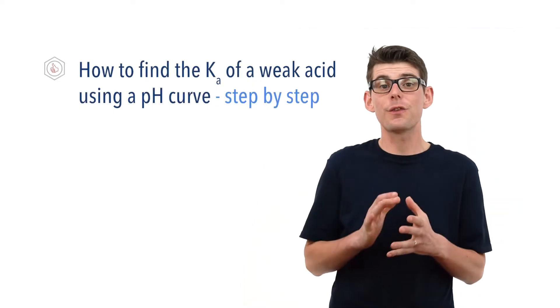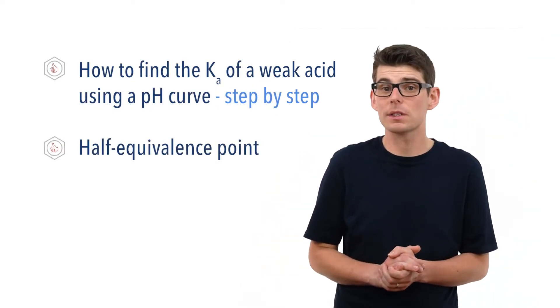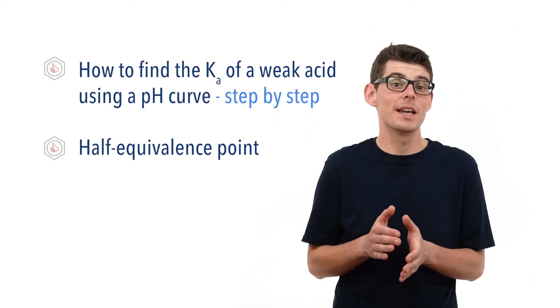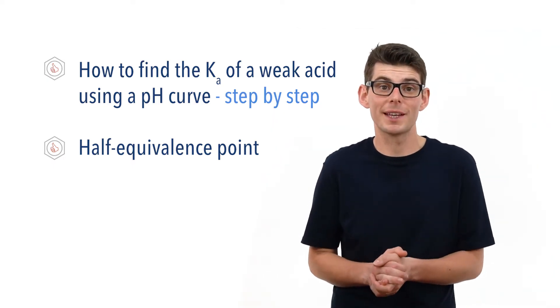Hello, Matt here from chemistrystudent.com. In this video we're going to look at how to find the acid dissociation constant of a weak acid using a pH curve from the titration of a weak acid with a strong base. We're going to talk about the steps involved, define the term half equivalence point, and look at an actual example of an ethanoic acid and sodium hydroxide titration to find the Ka of the ethanoic acid.